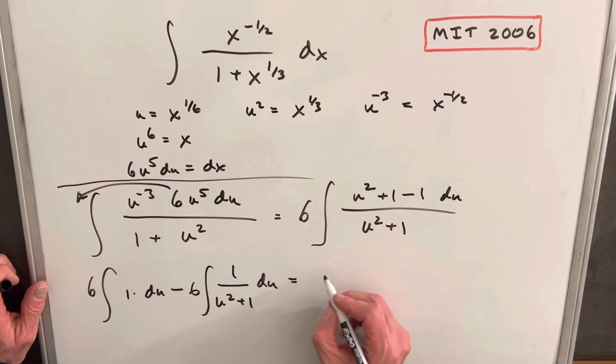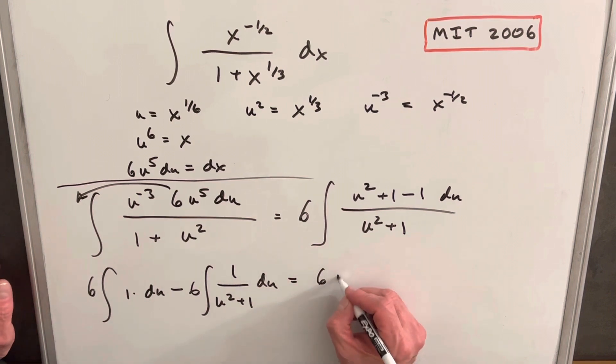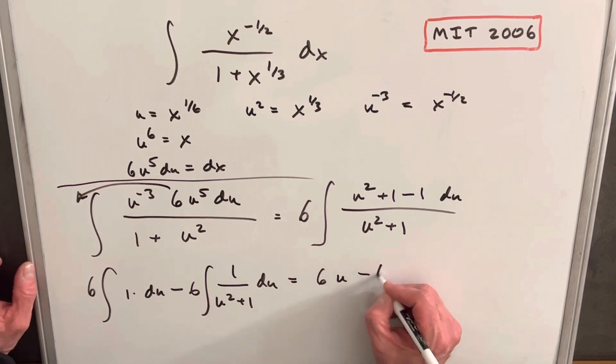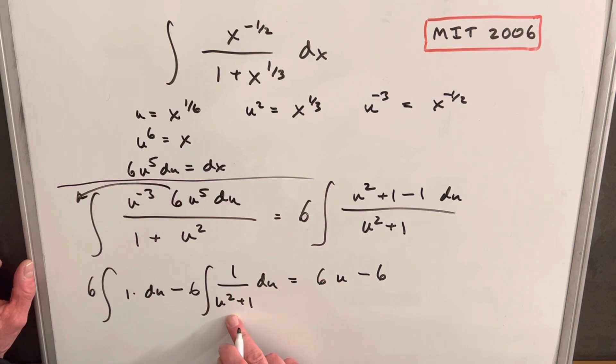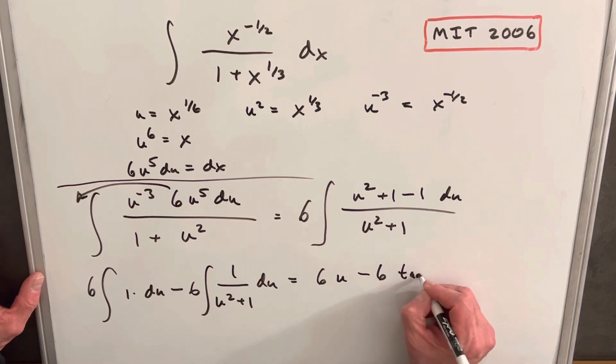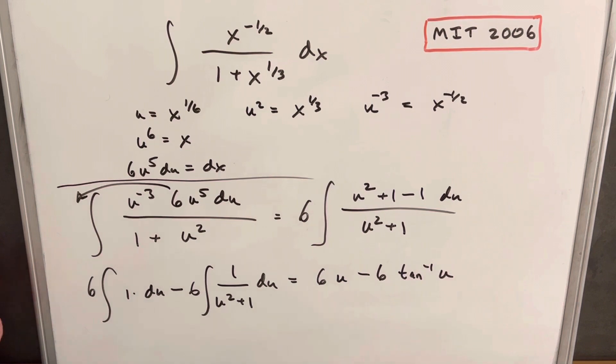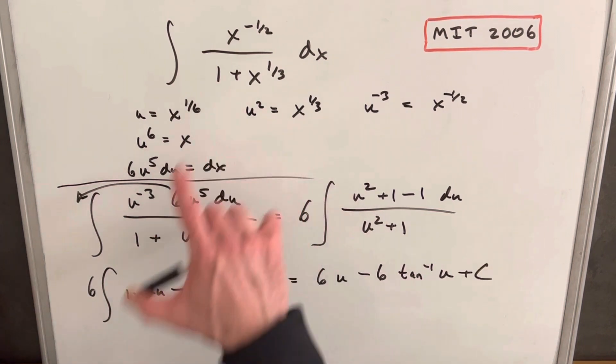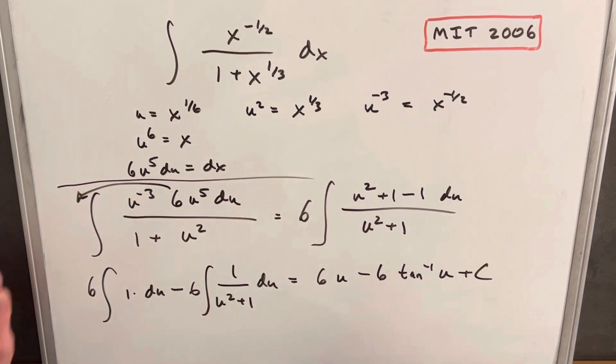So doing the first, we're going to have 6u minus 6, and then this is just our arc tan formula, so we're going to have inverse tan of u, and now I just need to back substitute my u, which is x to the one-sixth.